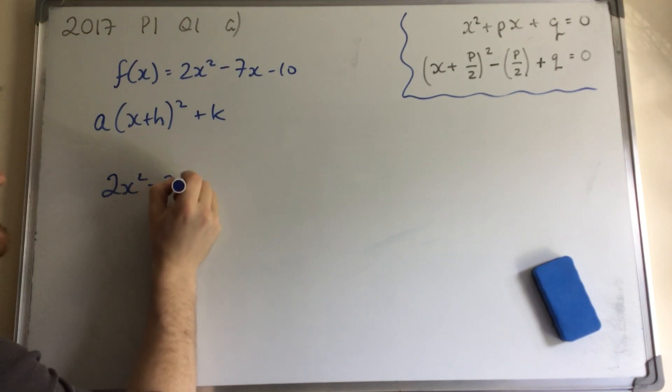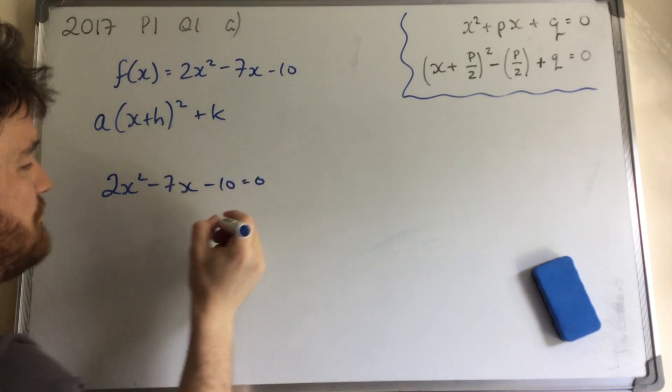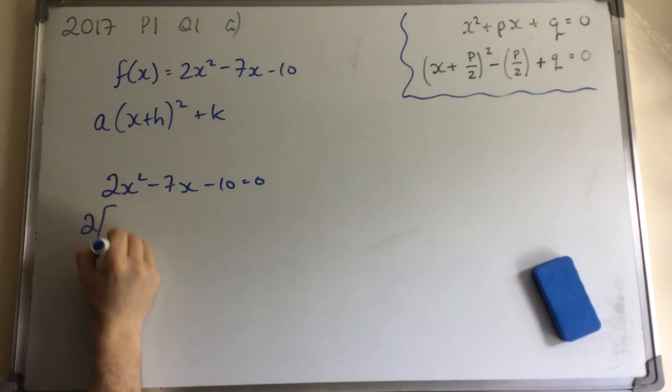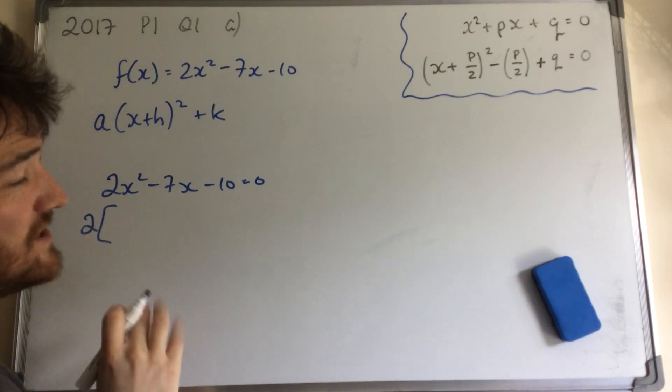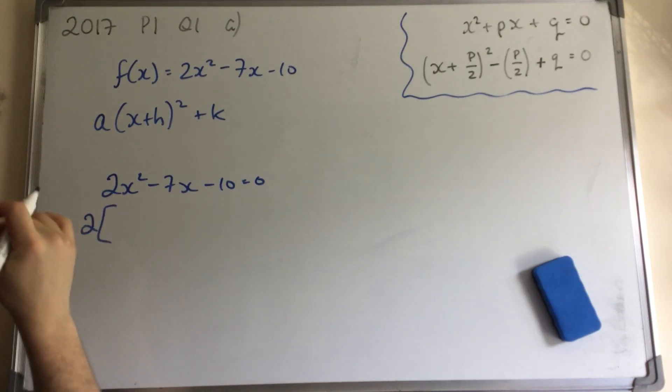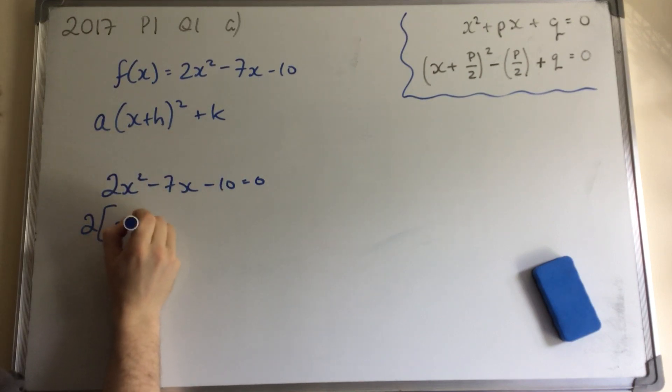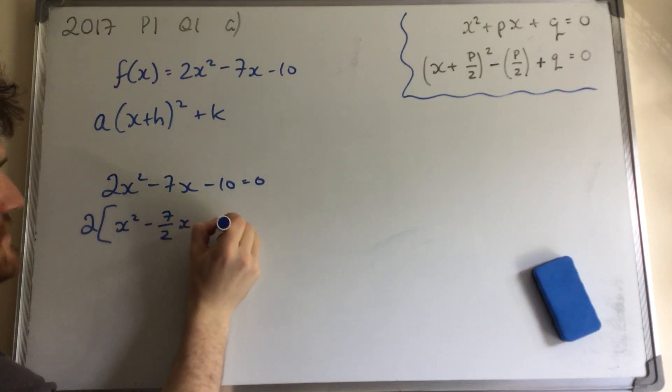I'll say 2x squared minus 7x minus 10 equals 0. I will factorize out the 2. I'm not going to divide by 2, because I want to get it in this form here at the end. So I'm just going to take out 2. So that becomes 7 over 2x minus 5.